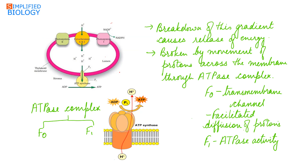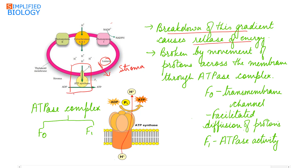The proton gradient created during non-cyclic and cyclic photophosphorylation plays a very important role in ATP synthesis. Breakdown of this gradient causes release of energy. This gradient is broken by the movement of protons across the thylakoid membrane — from the lumen to the stroma.